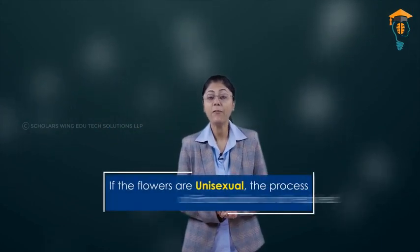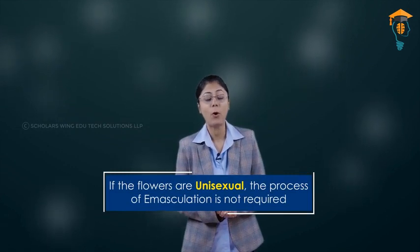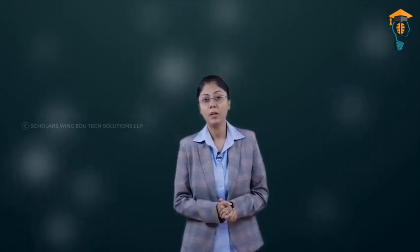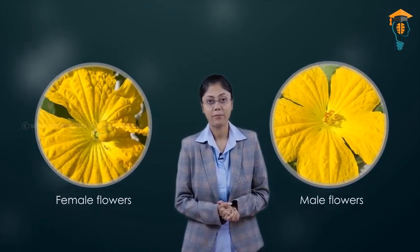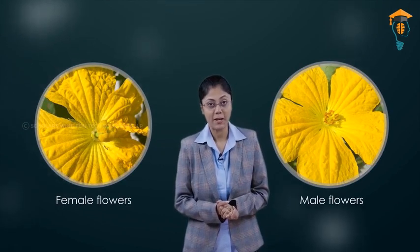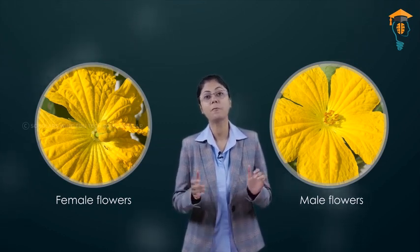If the flowers are unisexual, the process of emasculation is not required. Because in unisexual flowers, from the very beginning you have separate female flowers and separate male flowers. This was all about artificial hybridization.